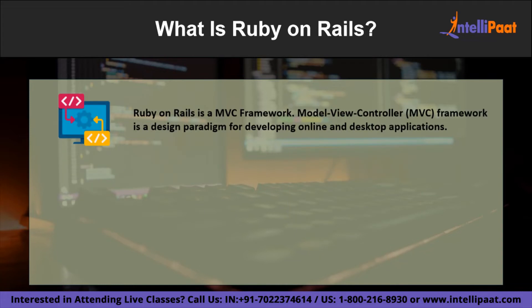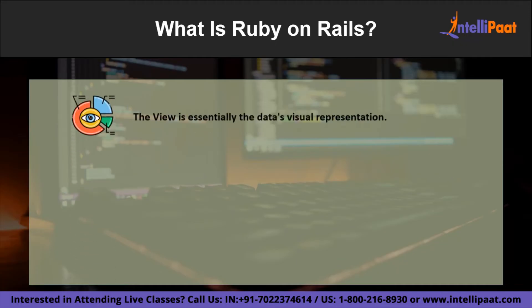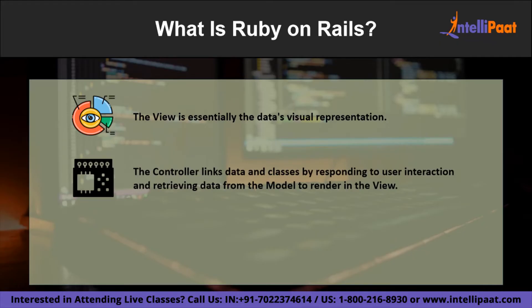In technical terms, Ruby on Rails is an MVC framework. The MVC or Model-View-Controller framework is a design paradigm for developing online and desktop applications, used by frameworks including AngularJS for JavaScript, Django for Python, and CakePHP for PHP. It organizes code by dividing the application's logic into three interrelated components: the Model represents the application's data and logic; the View is the data's visual representation — the template file; and the Controller links the two by responding to user interaction and retrieving data from the model to render in the view. This pattern makes Ruby on Rails applications very flexible.